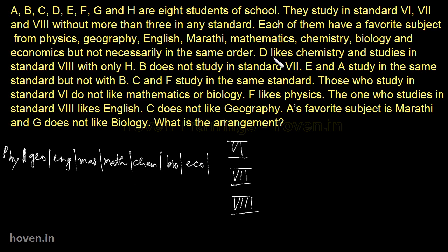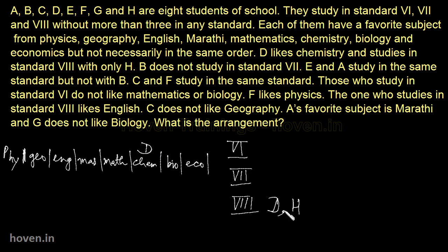He says D likes chemistry and studies in standard 8th with only H. Now about these standards, he has already given that more than three cannot study in one standard. D likes chemistry — this is a very concrete fact — so let us put D here with chemistry. D is in standard 8th and he studies with H only, so this standard is going to have D and H only.